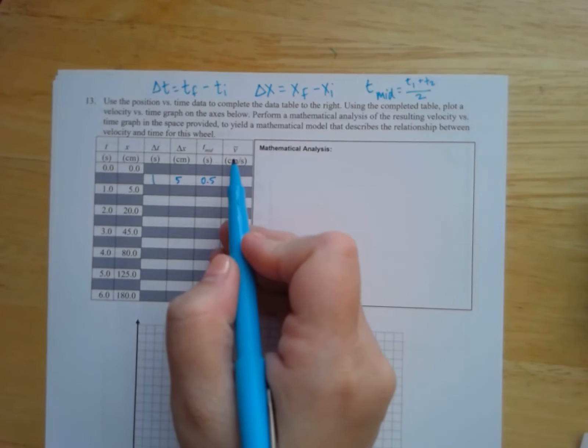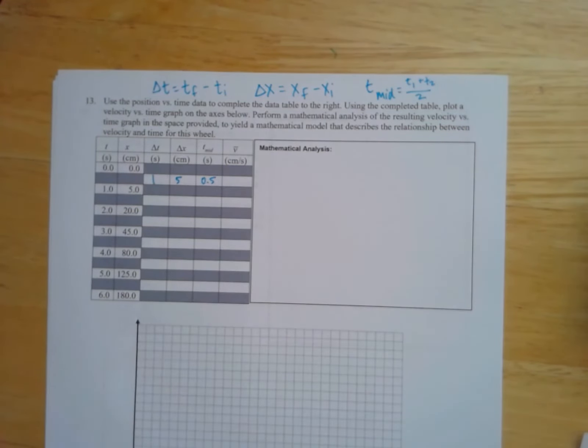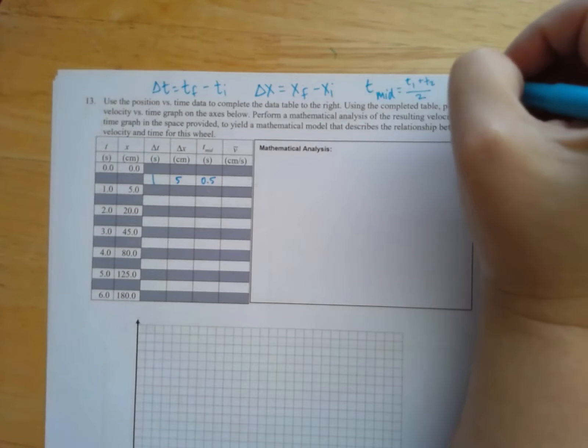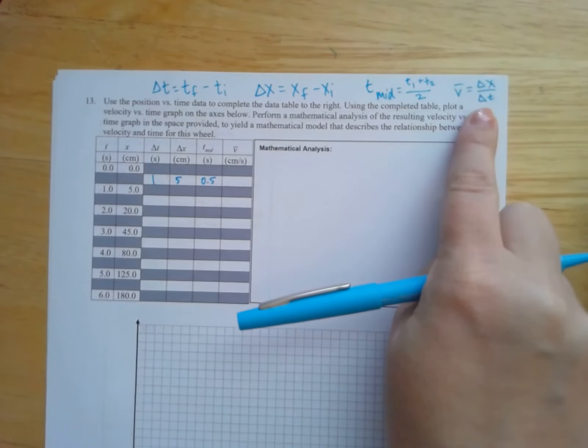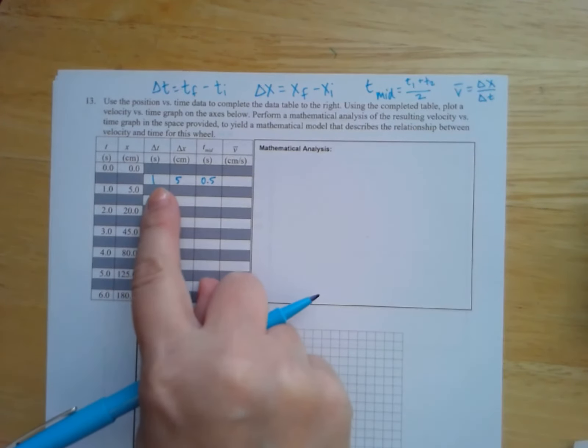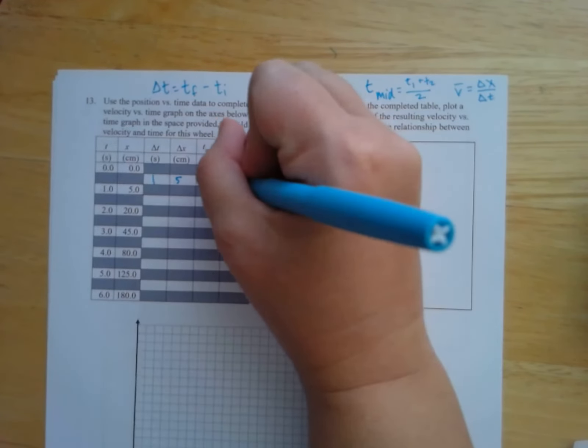Lastly, average velocity. We're used to average velocity at this point, right? So our average velocity is our change in position divided by our change in time. And we've already figured out both of those values. We figured them out here. Change in position divided by change in time is going to give us five.